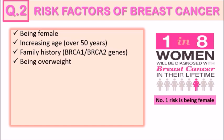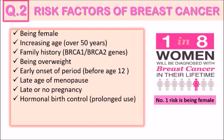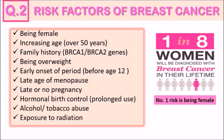Being overweight is also a risk factor. If you started your period early or experienced late menopause, your risk is higher due to the increased number of menstrual cycles and therefore hormone production. Women who have not been pregnant or who have been using hormonal birth control for many years are also at greater risk, and finally, overuse of alcohol and cigarette smoking.